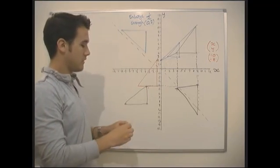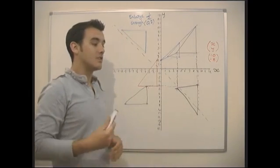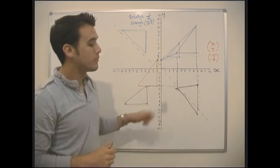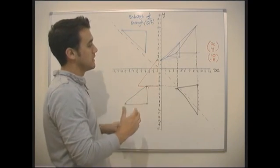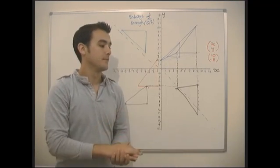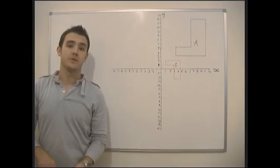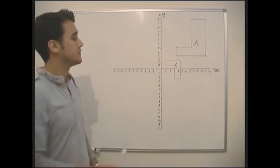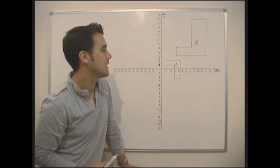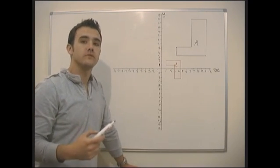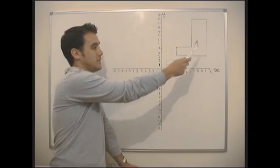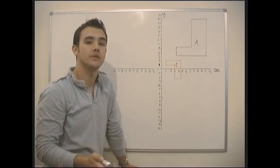So those are all the different types of transformations we can have: translations, enlargements, rotations, and reflections. Now there's a practice question where I'll show something that's been moved and we'll see how to specify that. We need to know how to get from shape A to shape B — there's more than one transformation involved, and there are several different ways of doing it. There's no one right way.